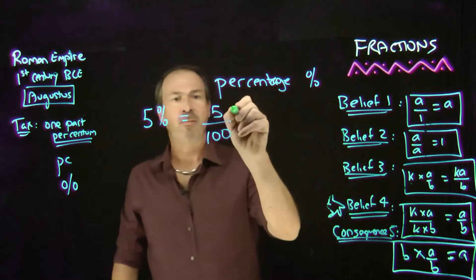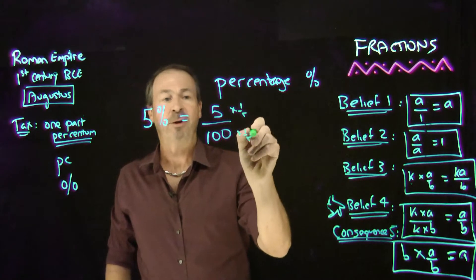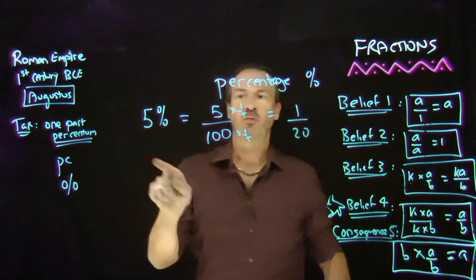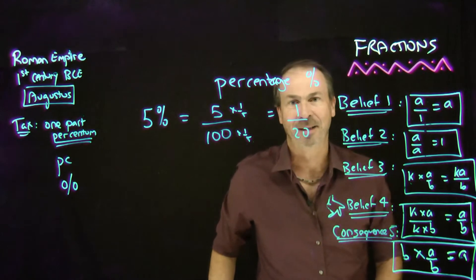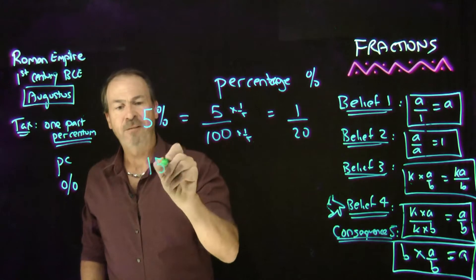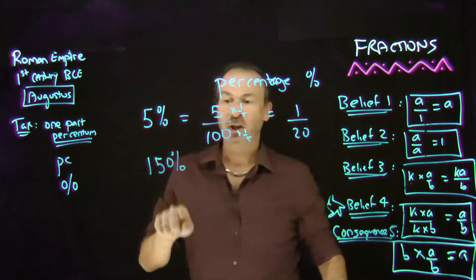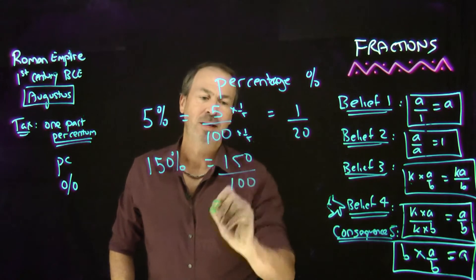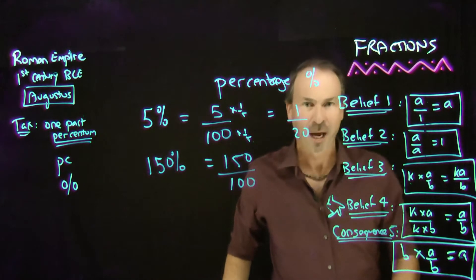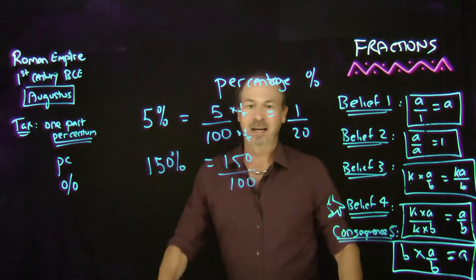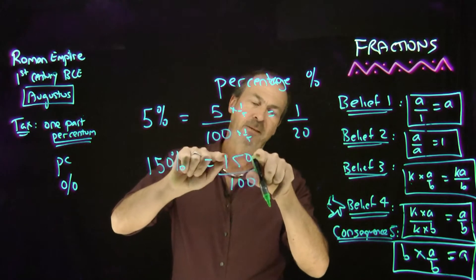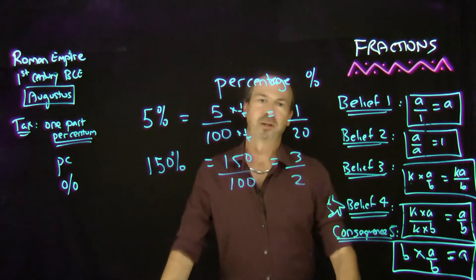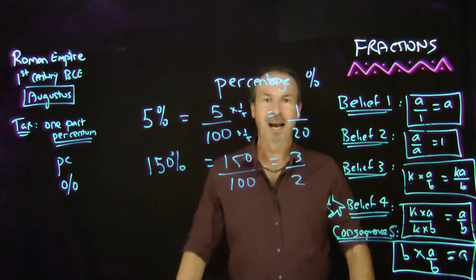Actually I'll make that fraction look a little bit simpler. If I multiply top and bottom by a fifth — divide the top by 5 gives me 1, divide the bottom by 5 gives me 20 — that's really the fraction 1 twentieth. If I do something like 150%, that is the fraction 150 per centum — 150 over 100. I can make that simpler: divide by 50 top and bottom, that would be 3 on the top and 2 on the bottom. It's really the fraction 1 and a half. So 150% is 1 and a half.